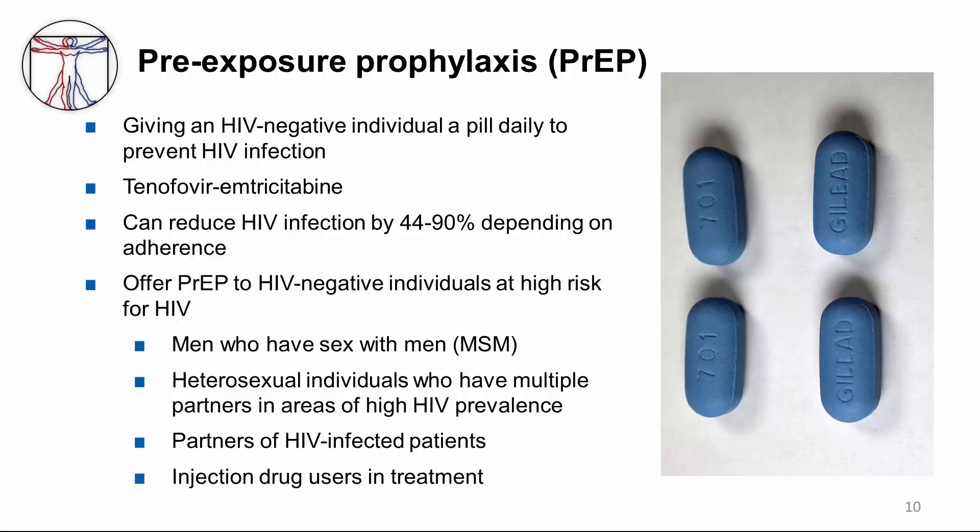Currently, guidelines offer PrEP to HIV-negative individuals who are at high risk for HIV. These include men who have sex with men in general, heterosexual individuals who have had multiple partners in areas of high HIV prevalence, partners of HIV-infected patients, and injection drug users in treatment.